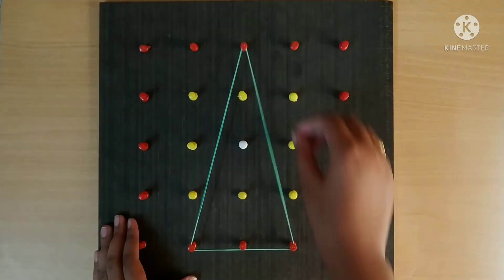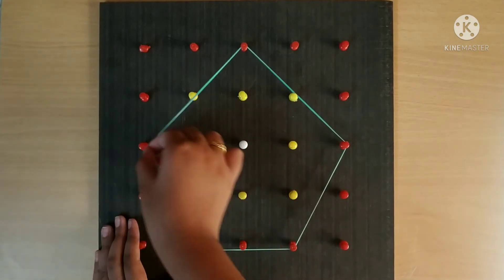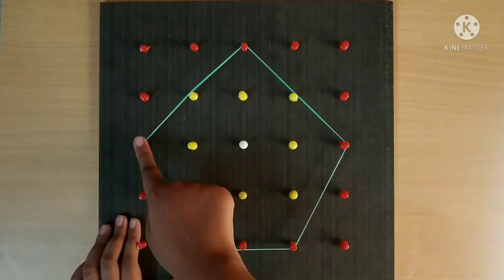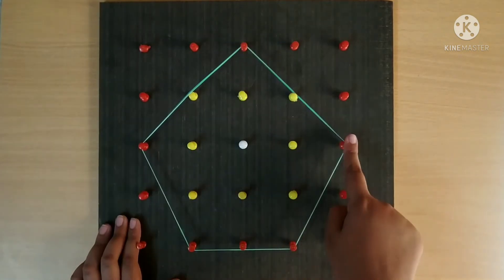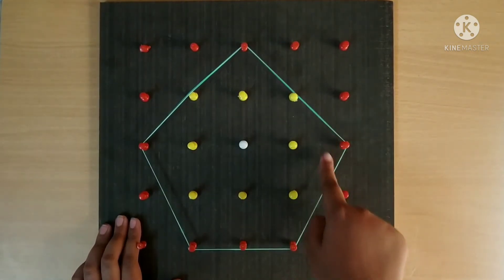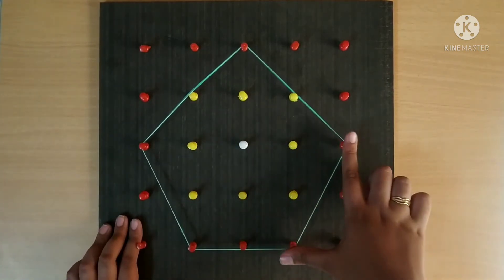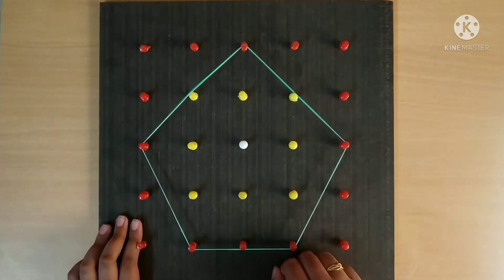Pentagon. A pentagon has 5 sides, 5 vertices, 5 angles. In a pentagon, all the 5 sides may or may not be equal.